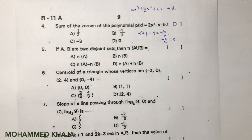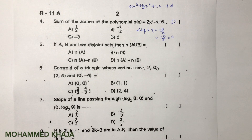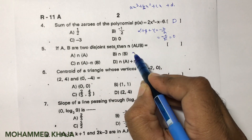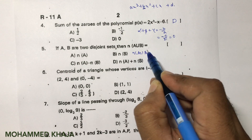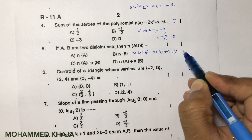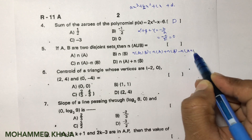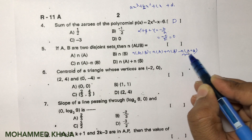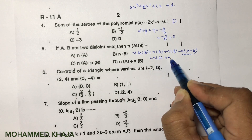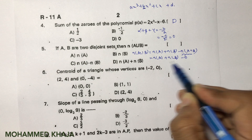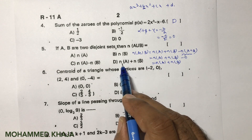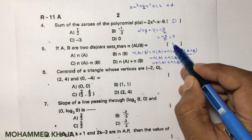If A and B are disjoint sets, find n(A∪B). The actual formula is n(A∪B) = n(A) + n(B) − n(A∩B). But since A and B are disjoint, A∩B is the null set, and the number of elements in the null set is 0. So the answer is n(A) + n(B). The correct option is D.